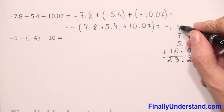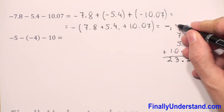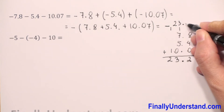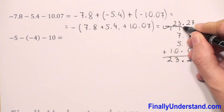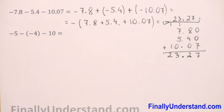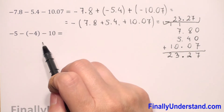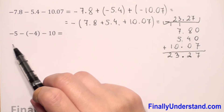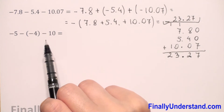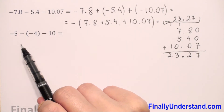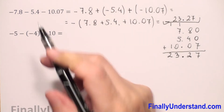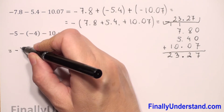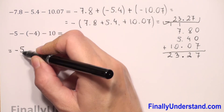So this is equal to negative 23.27. Now we have subtraction again — subtraction of integers. We change subtraction to addition of the opposite. The first number we copy: negative five.